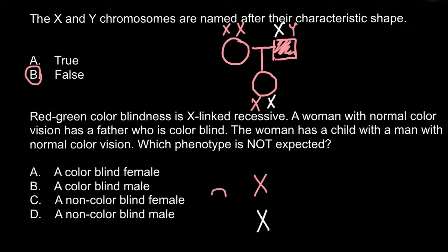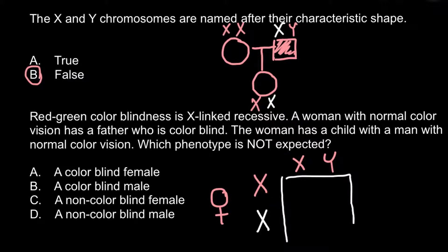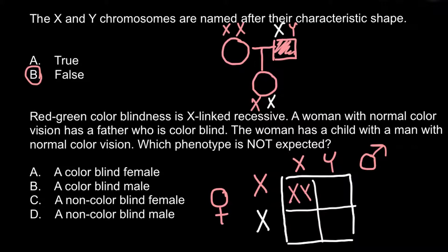The female side of the Punnett square carries one defective X and one normal X. The male has normal genotype XY. When we build the Punnett square, we can predict genotypes and phenotypes of the progeny. The top side is the male side. In the first box we would have a phenotypically and genotypically normal female. In the next box we would have one normal X chromosome from the father's side and one defective X chromosome from the mother's side. Then we would have one normal X from the mother's side and one normal Y from the father's side.